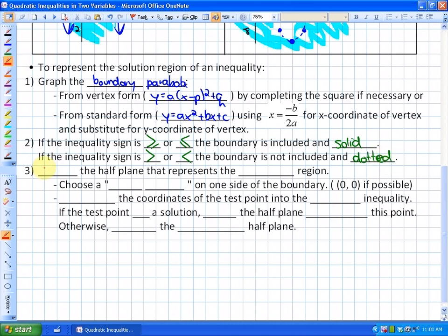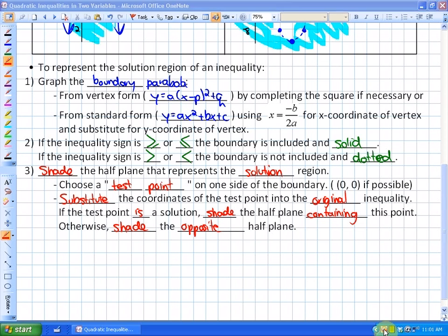Finally, what we need to do is decide which side or to shade the half plane that represents the solution region. To do that, what we do is take a test point. So choose a test point on one side of the boundary, doesn't matter which side. (0, 0) if possible, it makes the math a little bit easier to do. Then we take that test point, we substitute, and the important thing is we must substitute the coordinates of the test point into the original inequality and no other. If the test point is a solution, then we shade the half plane that contains this point. And if otherwise, what we do is we shade the opposite half plane.